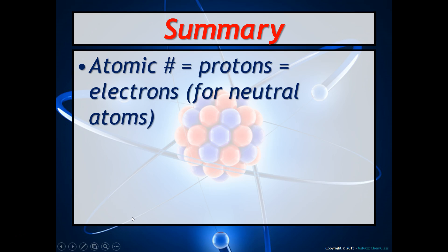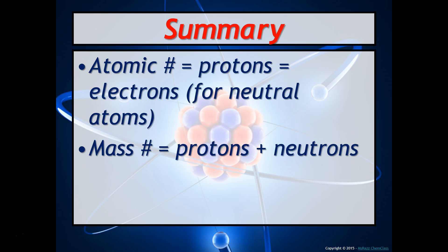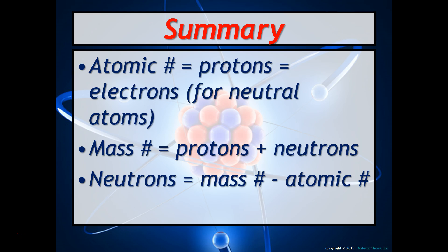To summarize: atomic number equals the number of protons, which also equals the number of electrons for neutral atoms. Mass number equals the number of protons plus neutrons. Remember, protons and neutrons have a relative mass of 1, whereas electrons have a mass of 1/1840 — so when you hear "mass number," think about the particles with substantial mass: protons and neutrons. To find the number of neutrons, take the mass number minus the atomic number.